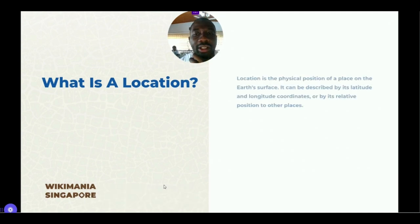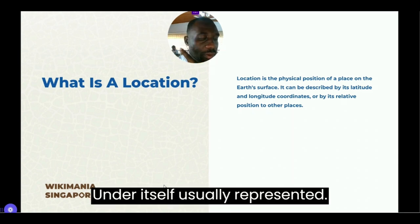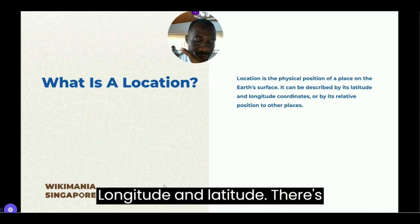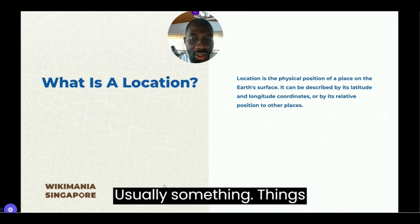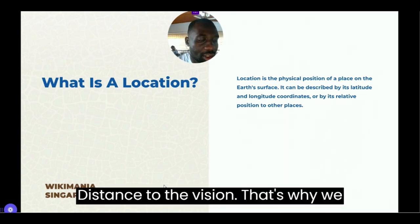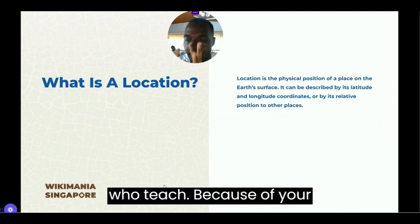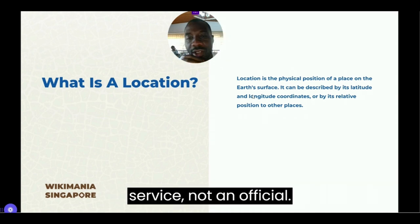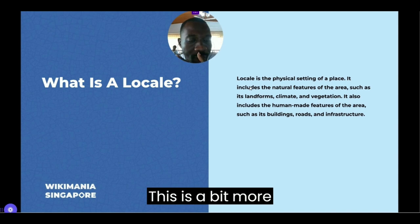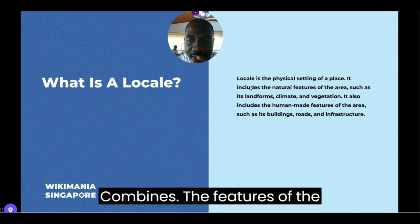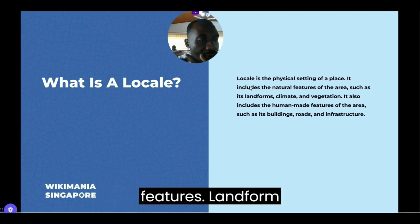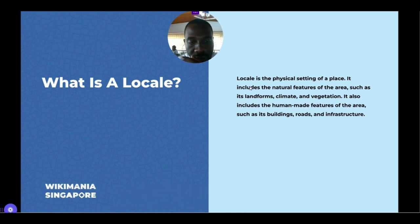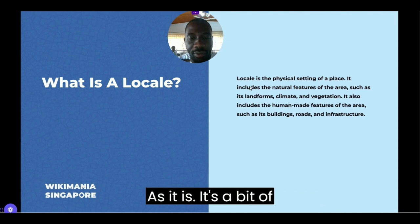Location is just a piece of space on the Earth's surface, usually represented as longitude and latitude — nothing more than that. Things like a GPS determine the location. The locale is a bit more in the realm of human geography, where it combines features of the area such as roads and natural features such as landforms, mountains, and vegetation — all of these add a bit of life to a place.